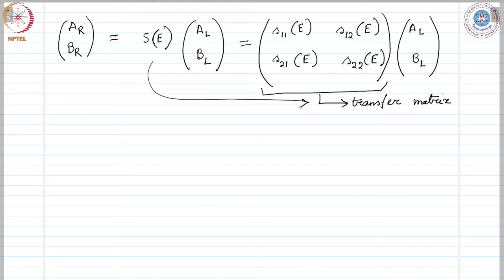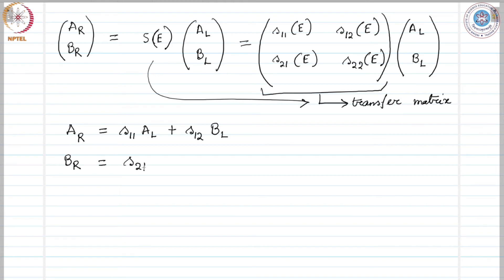Performing the matrix multiplication, we can write the linear equations: A_R = S_11 · A_L + S_12 · B_L, and similarly B_R = S_21 · A_L + S_22 · B_L. This linear set of equations results from the matrix multiplication, and the transfer matrix S corresponds to a given potential V(x) of arbitrary shape and the chosen energy E of the electron.